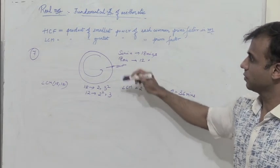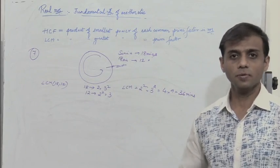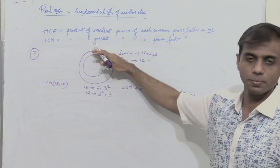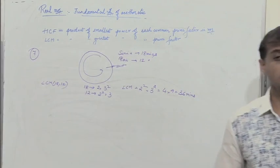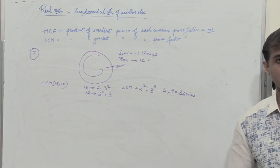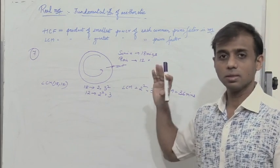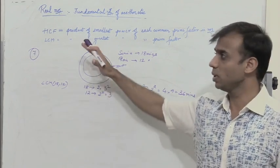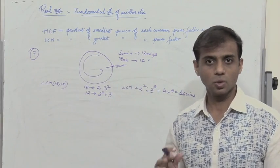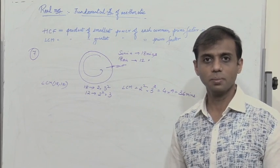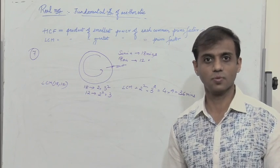In this lecture session, we have gone through the fundamental theorem of arithmetic and seen how to find HCF and LCM. We have also seen that the product of HCF and LCM equals the product of the two numbers considered. In the next video, we will go through the theory and problems in the third exercise of this unit. Please like, share, and subscribe, and press the bell icon for notifications. Thanks for watching.